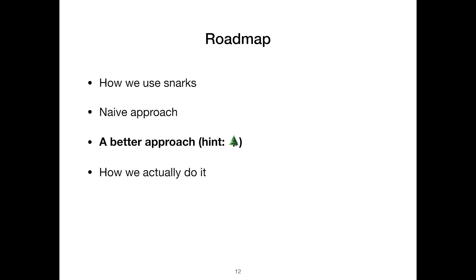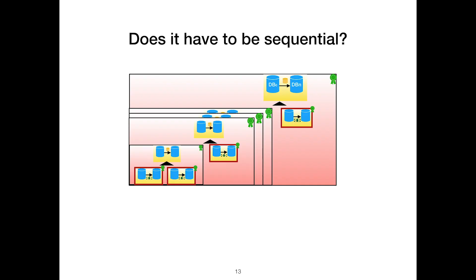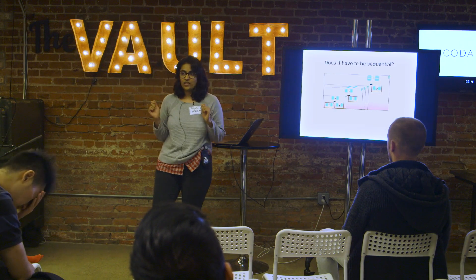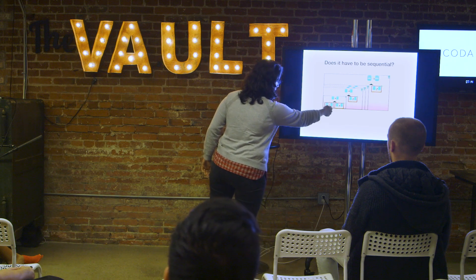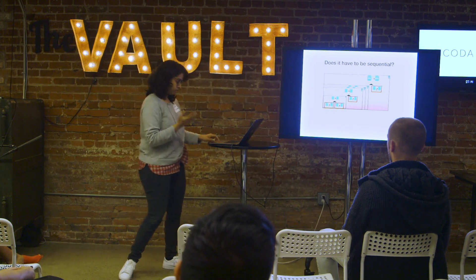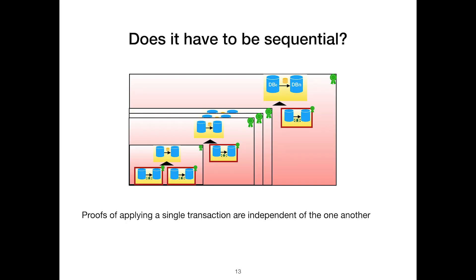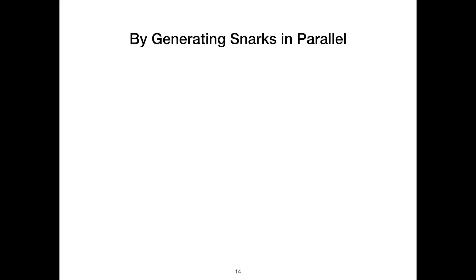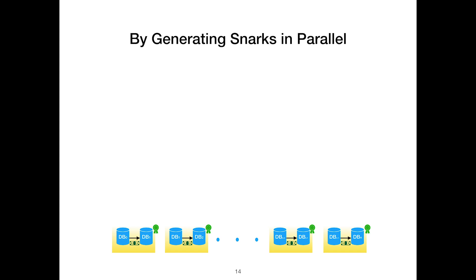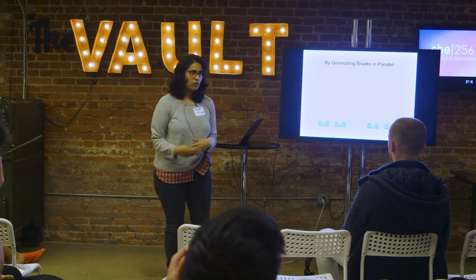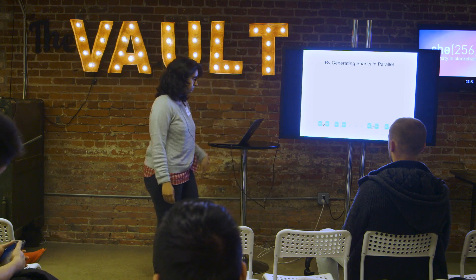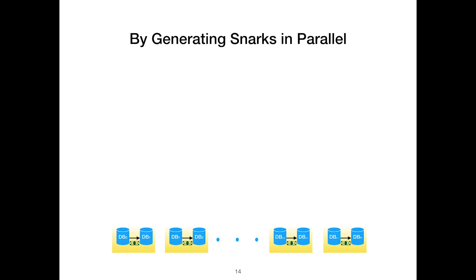This brings us to a better approach. Let's take a step back and see why it has to be sequential. If you look at the diagram, these individual transaction SNARKs are not dependent on each other at all, which means you can generate them in parallel. You don't have to wait for two SNARKs to be composed before proceeding. So what we do is generate SNARKs in parallel — DB0 to DB1, DB1 to DB2, and so on up to DBN-1 to DBN — and prove all of those individual transactions in parallel.